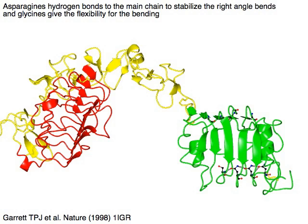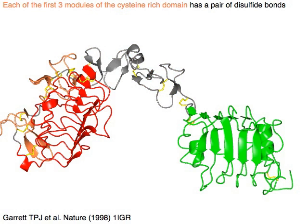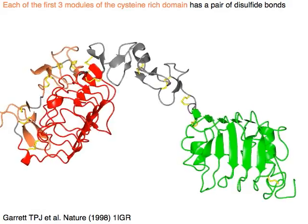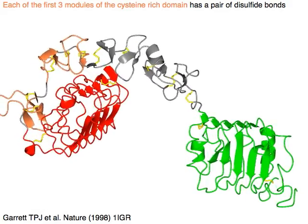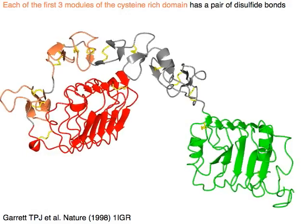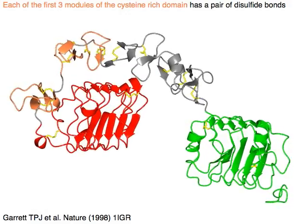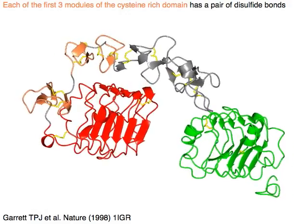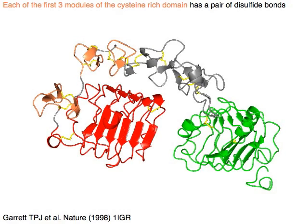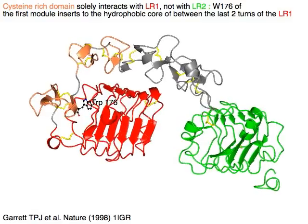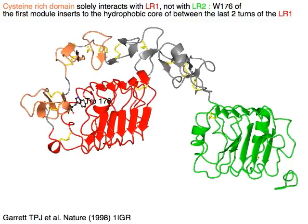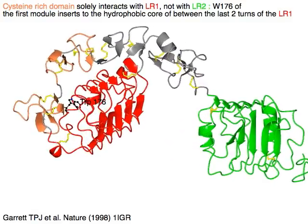Each of the first three modules of the cysteine-rich domain in orange is stabilized by a pair of disulfide bonds between the cysteines. The cysteine-rich domain solely interacts with LR1 in red but not with LR2 in green, and the major interface is at the first three modules in orange.